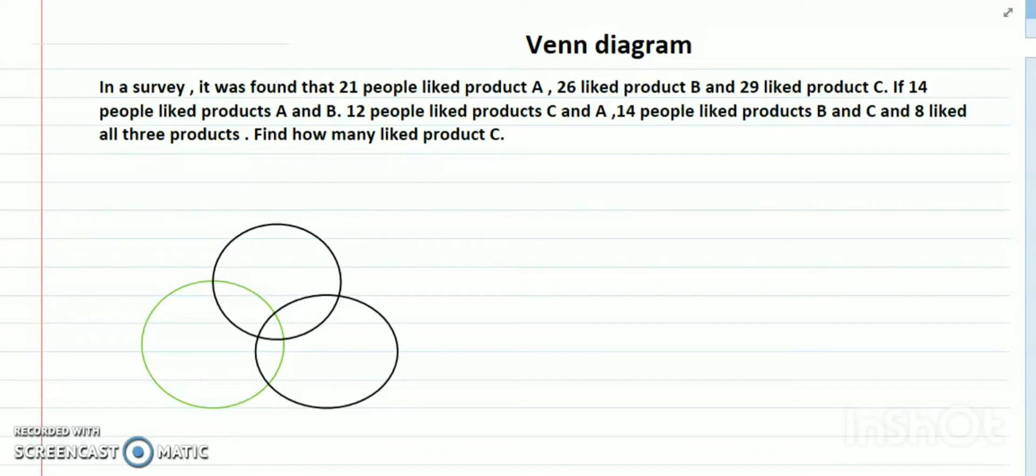In a survey, it was found that 21 people liked product A, 26 liked product B, and 29 liked product C. If 14 people liked products A and B, 12 people liked product C and A, and 14 people liked product B and C, and 8 liked all three products, how many liked only product C?